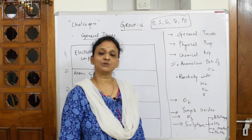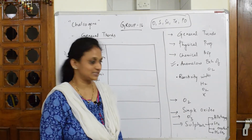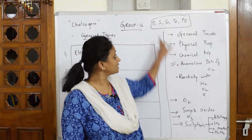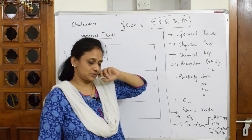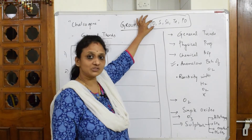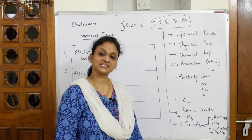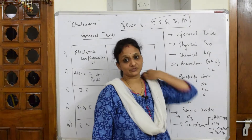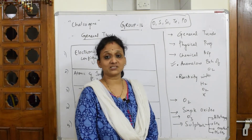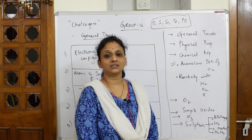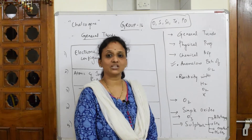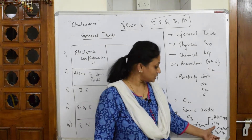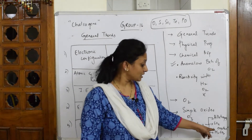Then we'll study simple oxides and compounds of oxygen — simple oxides and ozone. After completing the oxygen section, since only the first two elements are in Grade 12, I'll come back to the sulfur element. I'll teach you about allotropes of sulfur — monoclinic sulfur, plastic sulfur — and the alpha and beta structures, which are needle-shaped and prismatic respectively.